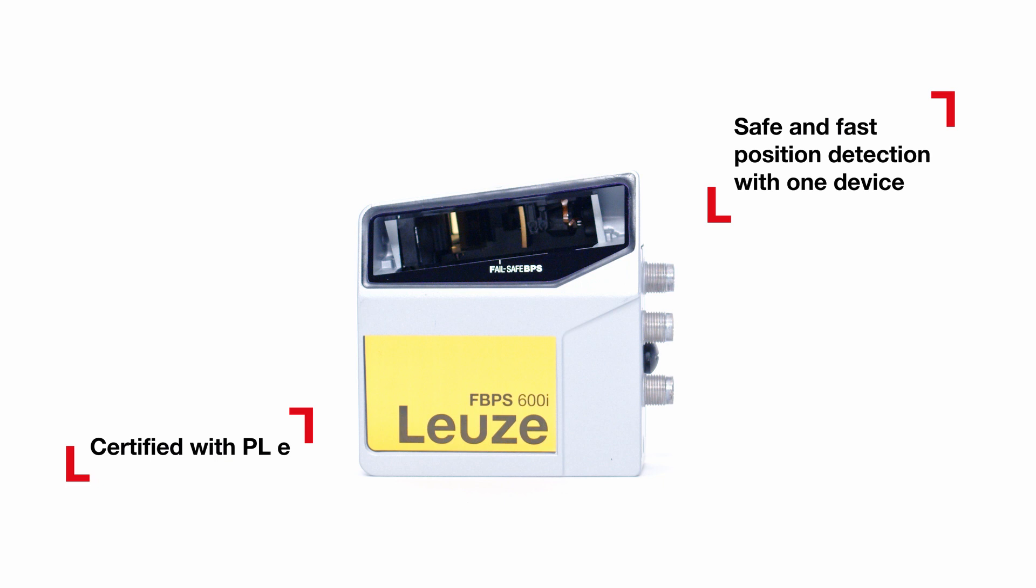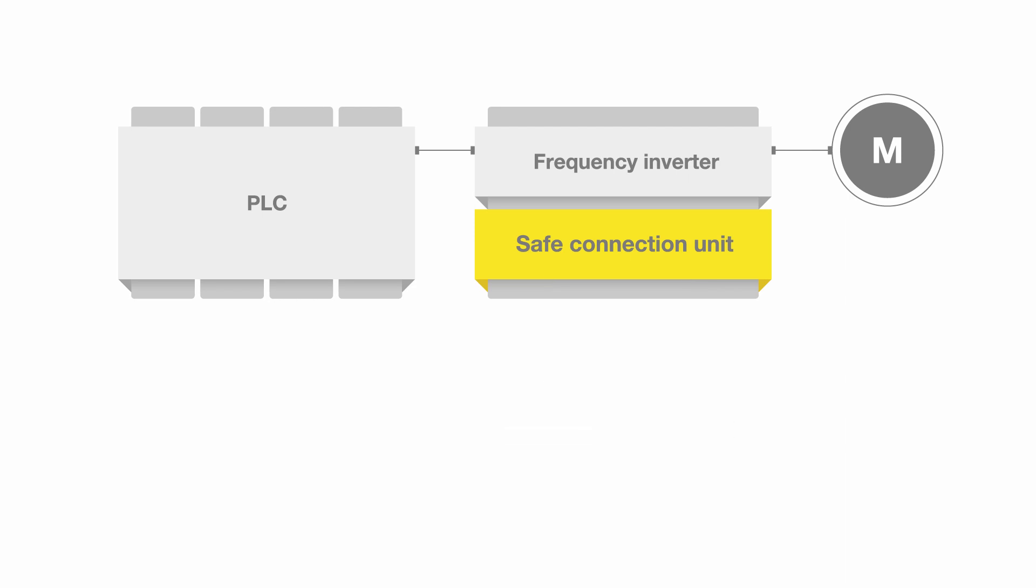With the FBPS 600i, only one sensor is required for safe position detection. The device is connected via two SSI interfaces to a safe connection unit.